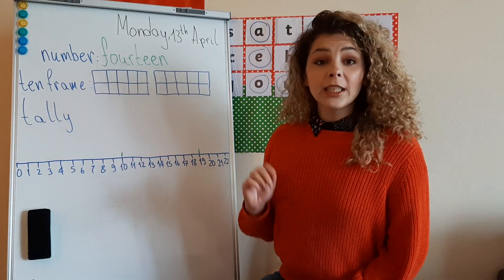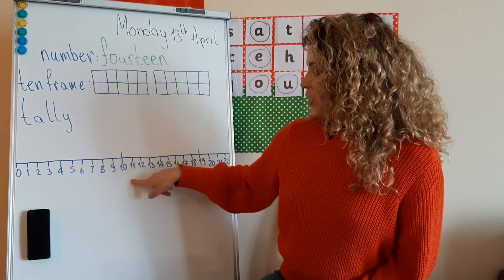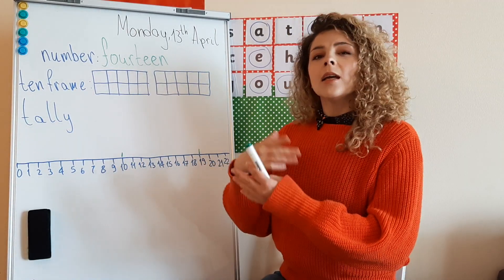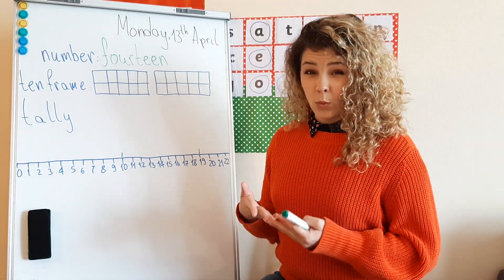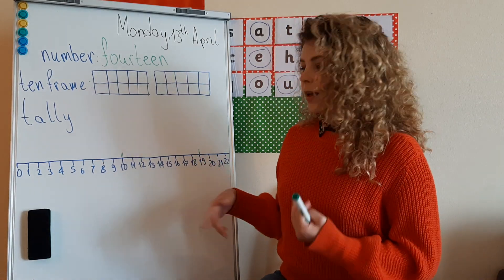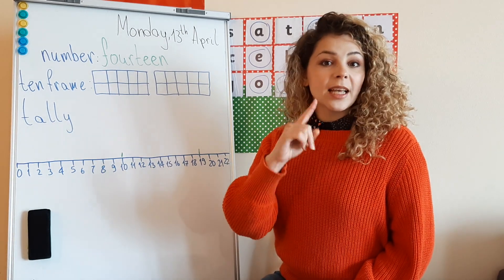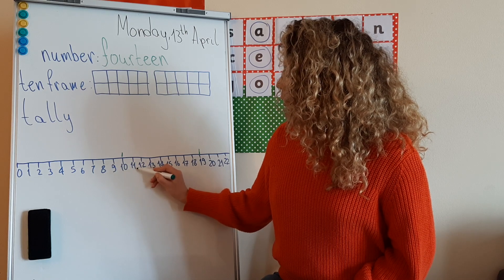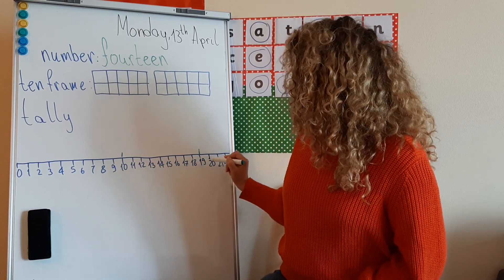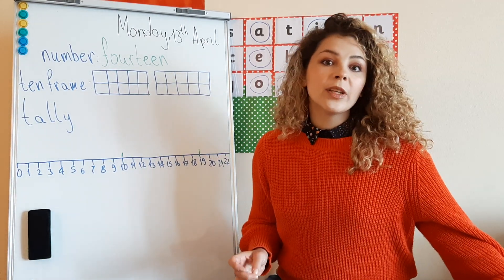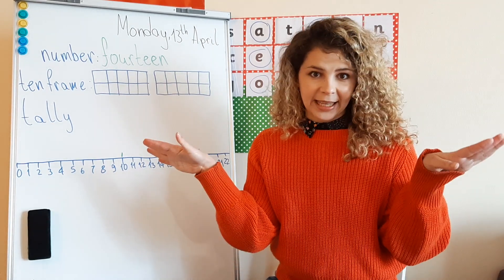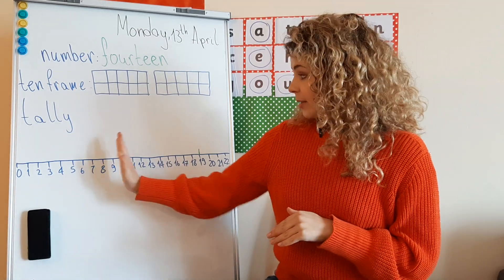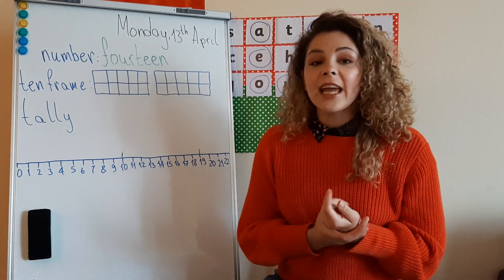What is so special about these numbers? Look at the way they look — all these numbers are two-digit numbers. They're not written with just one digit, but with two. One and zero, one and one, one and two, one and three — something is repeating. The first digit is always number one, and the second ones go in order: 0, 1, 2, 3, 4, 5, 6, 7, 8, 9. These are called the teen numbers — between 10 and 19 — and they all start with one.